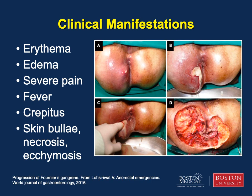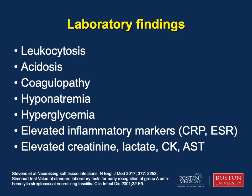The time from initial onset to fulminant necrosis of necrotizing soft tissue infections can be anywhere from two to seven days. Depending on the degree of progression, patients may present with a wide range of symptoms from erythema and edema to crepitus to skin bullae or frank necrosis. Patients typically present with pain out of proportion to the examination. In addition to systemic manifestations such as fever and tachycardia, laboratory findings typically seen include leukocytosis along with neutrophilia, electrolyte imbalances such as hyponatremia and hyperglycemia. Elevated inflammatory markers such as C-reactive protein and erythrocyte sedimentation rate, as well as creatinine and lactate, may also be noted and indicate the severity of illness.